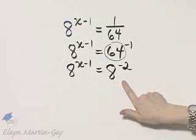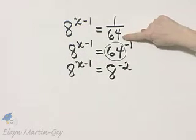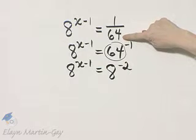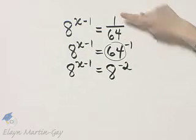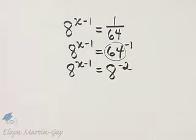Now you could have done this right side in probably one of two orders. You could have written first 64 as 8 squared, then moved it up to the numerator as 8 to the negative 2. That's fine or in the order that I just did.